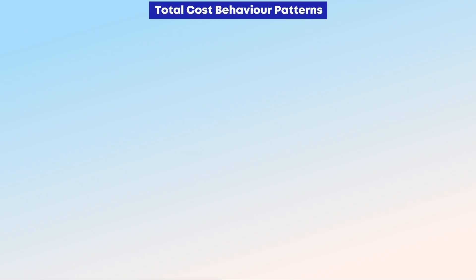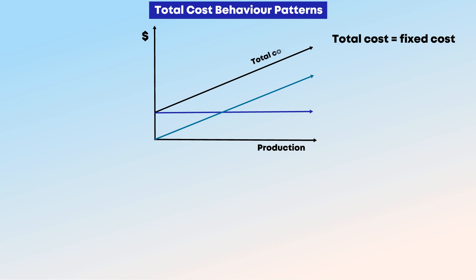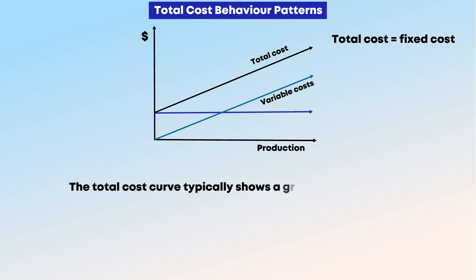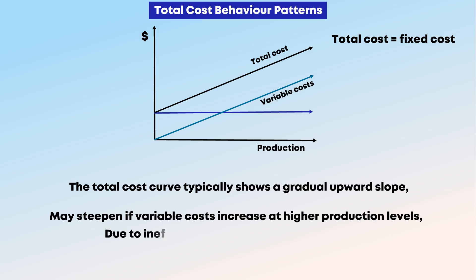Total cost behavior patterns: At zero production, total cost equals fixed costs since no variable costs are incurred. As production begins, total cost increases at a rate determined by variable cost per unit. The total cost curve typically shows a gradual upward slope that may steepen if variable costs increase at higher production levels due to inefficiencies or capacity constraints.